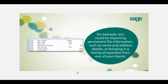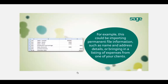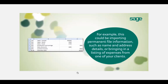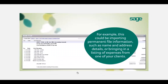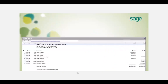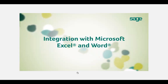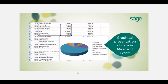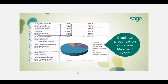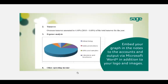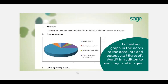Standard financial information can be imported from Excel, but you can also import other types of information — for example, permanent file information such as name and address details, or a listing of expenses from one of your clients. Here are a few examples of how great your reports could look by doing minimal additional work. Here's an example of a simple pie chart as a graphical presentation of data in Excel. With Sage, these graphs can be embedded within the notes to the accounts and output to Word. You can also customise your accounts with your own practice logo.